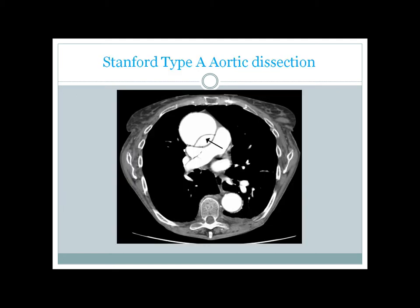Here you can see a very good CT scan of the chest. It's a contrast CT scan showing a Stanford type A aortic dissection. Stanford type A is that type of aortic dissection where the ascending aorta is involved.